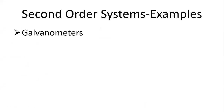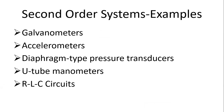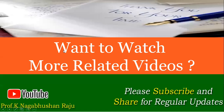Examples of second order systems include galvanometers, accelerometers, diaphragm-type pressure transducers, U-tube manometers, and all circuits involving inductance along with resistance and capacitance — these are all considered second order systems. This covers the order of the instruments. I hope it is clear — thank you very much.